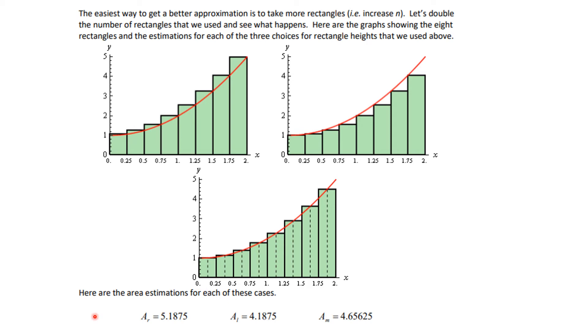So these are the area estimates for each of them. And again this is still an upper bound, this is still a lower bound, and this is somewhere in between. But you see we're getting a better and better estimate of what the actual area must be.